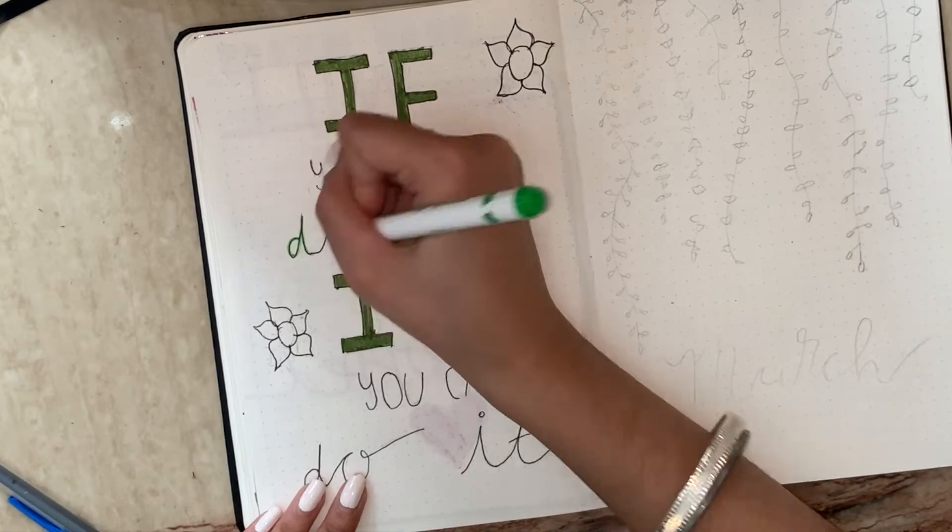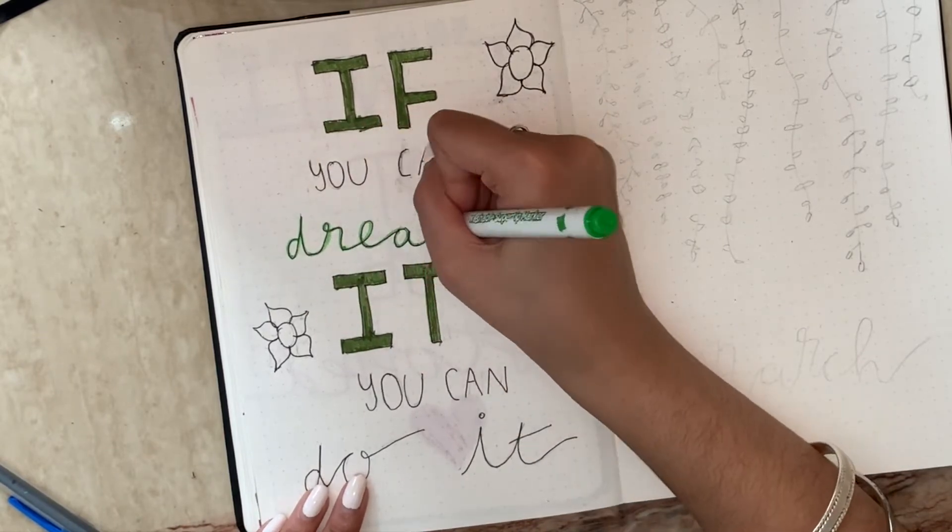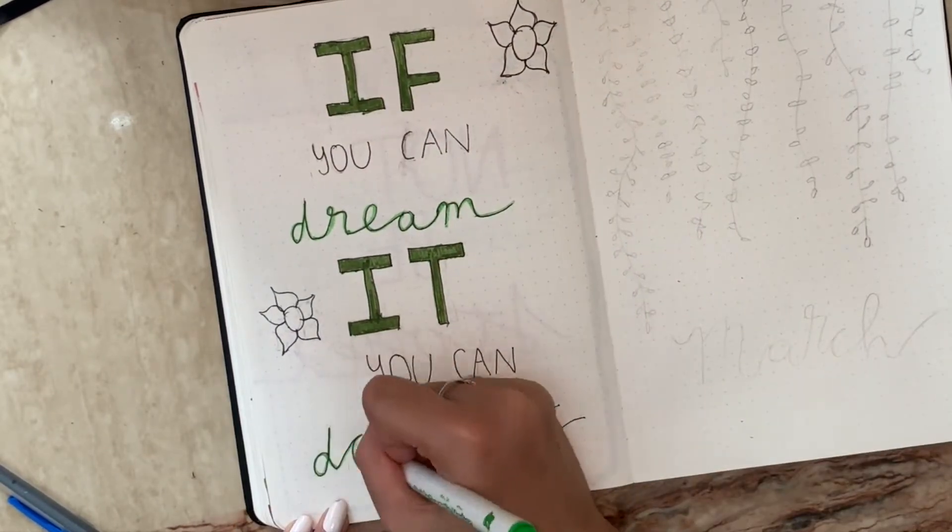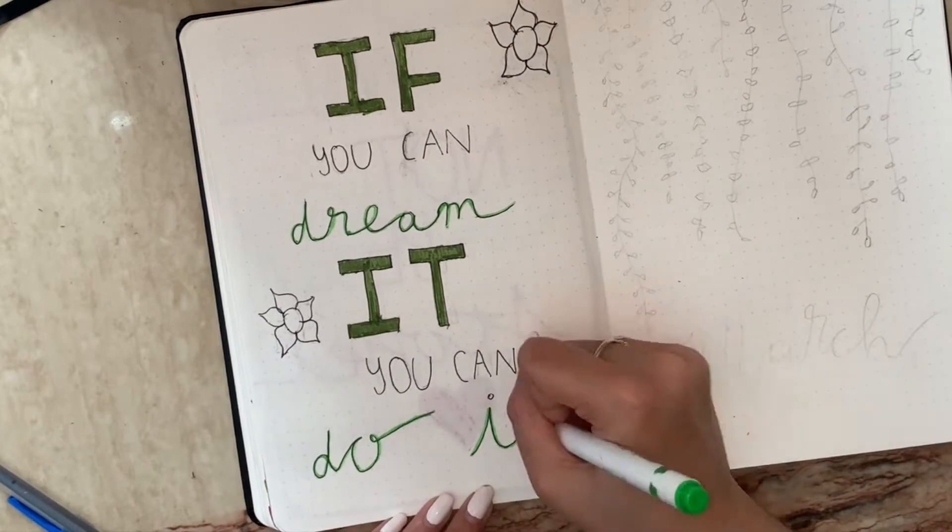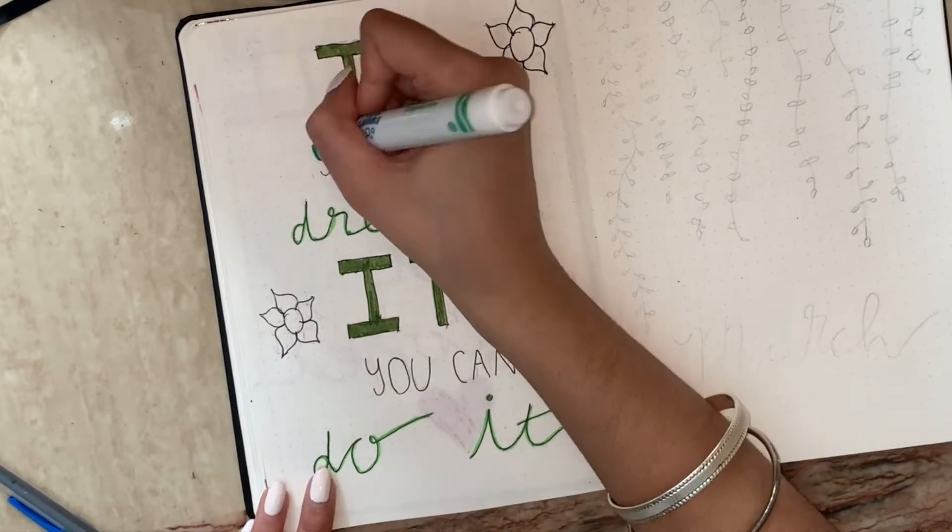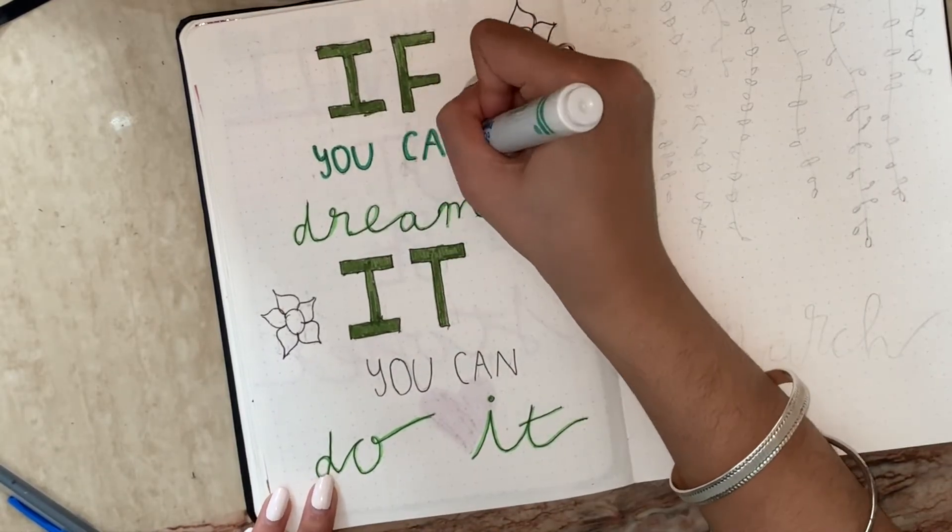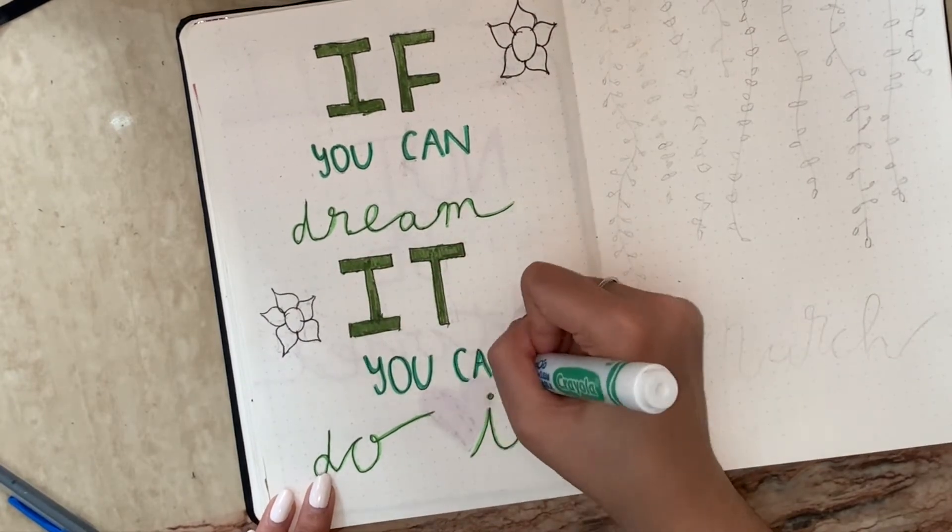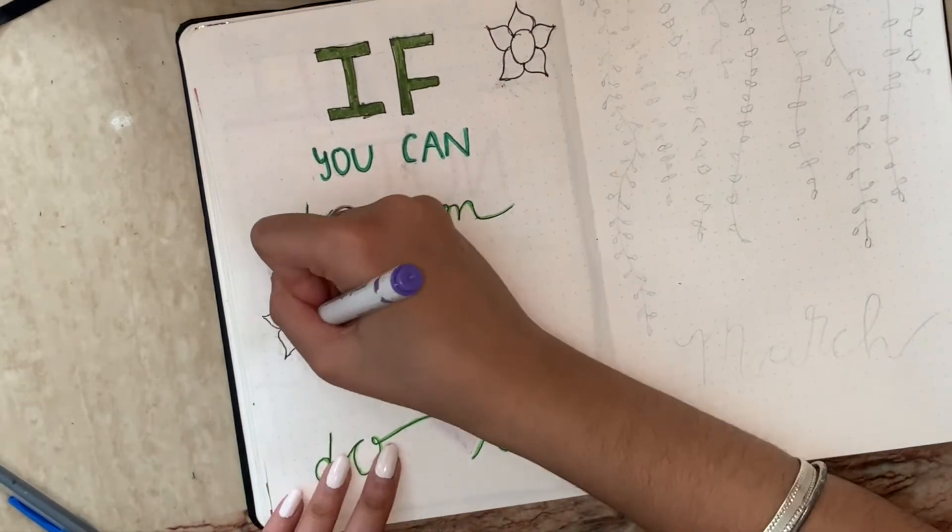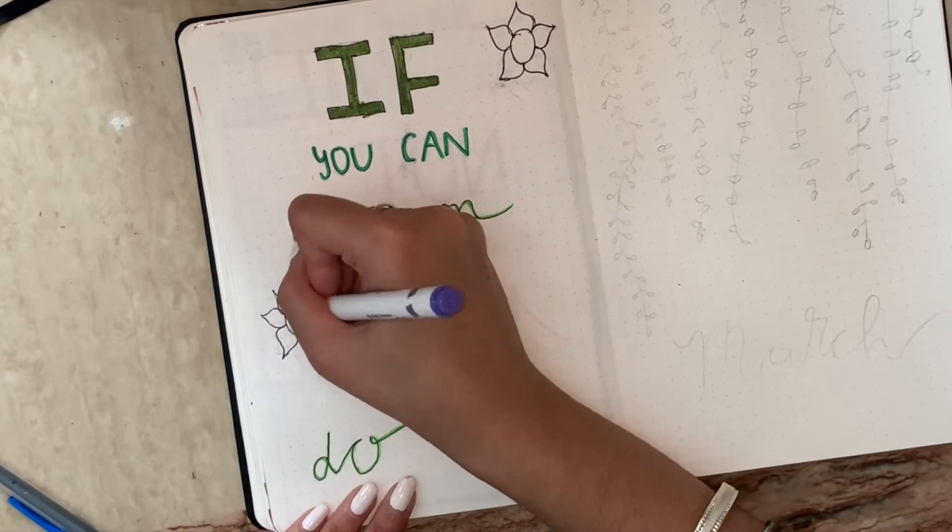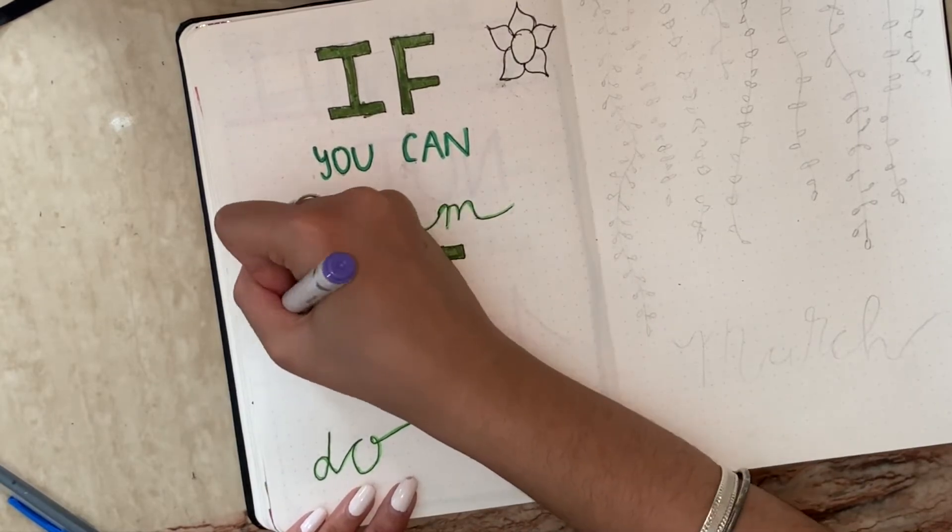Then I'm going with the lighter green and highlighting the letters dream and do it. Then I'm going with another green and going over the letters you can, and now I'm going to color in the flowers with purple because I'm just adding a little hint of purple in the theme.